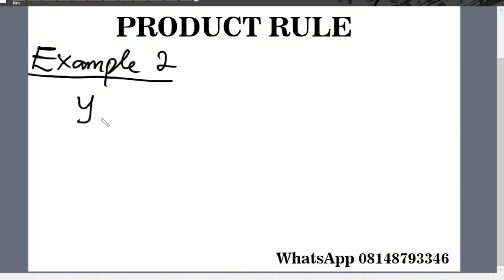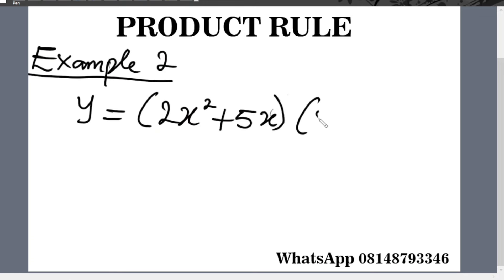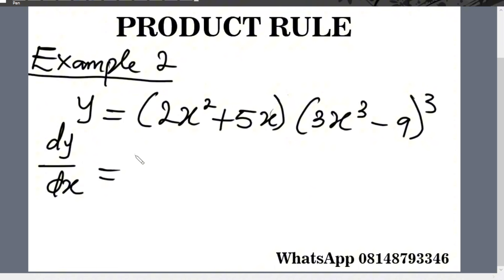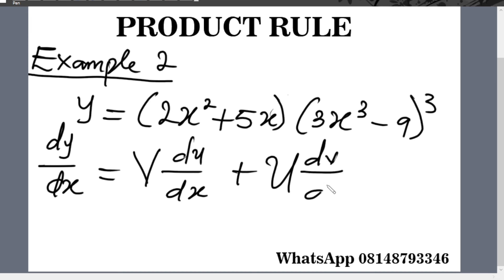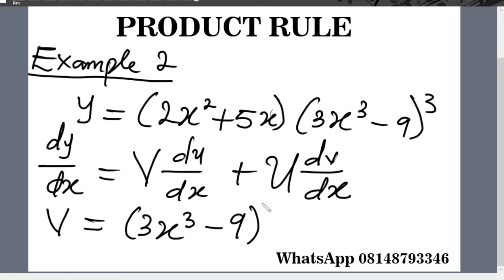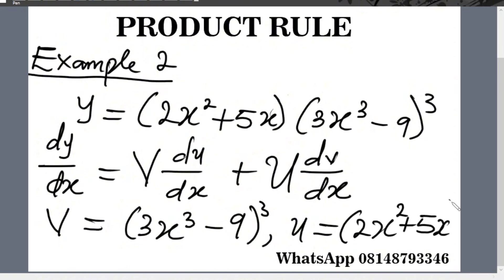Example 2: if y equals (2x squared plus 5x) multiplied by (3x cubed minus 9) raised to the power 3, find dy over dx. The first thing is to write down the product rule formula: dy over dx equals v du/dx plus u dv/dx. So v equals (3x cubed minus 9) raised to the power 3, and u equals (2x squared plus 5x).